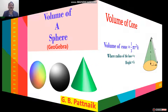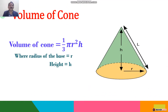First of all, I will find out the volume of a cone. Volume of a cone is equal to 1 by 3 pi r square h, where the radius of the base of the cone is equal to r and the height of the cone is equal to h. So, volume of the cone is equal to 1 by 3 pi r square h.